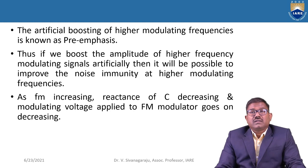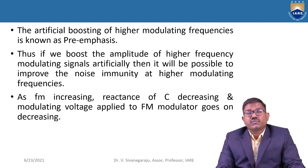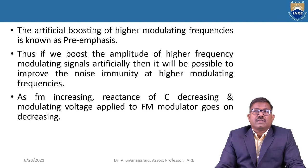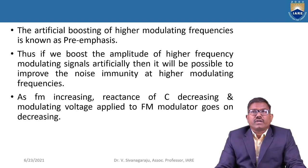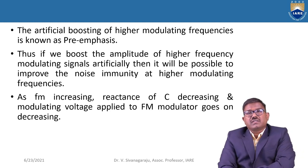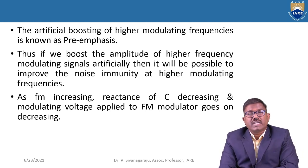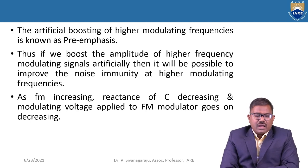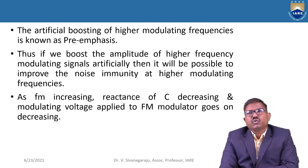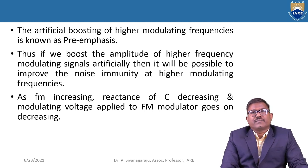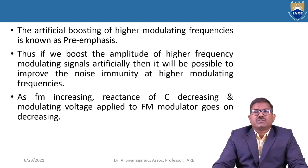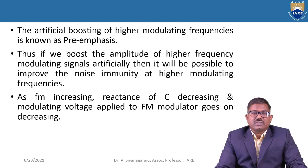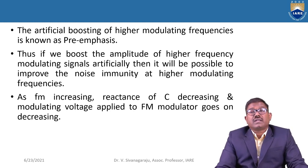While the modulating frequency is more than 2 kHz to 15 kHz, this effect of noise is increasing. So we are going to suppress that effect of noise just by boosting the amplitude of those modulating frequencies. As frequency increases, the reactance of C decreases, and the modulating voltage applied to the FM modulator goes on increasing. So by using that circuit we are going to achieve pre-emphasis.